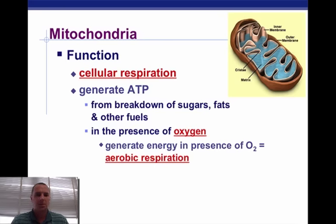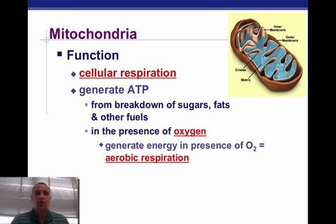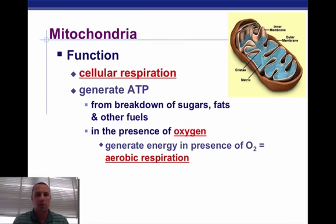Let's talk about the mitochondria first. The mitochondria's main function is to deal with cellular respiration, which is what you and I do. We take in oxygen. We use that oxygen to break down the food that we've eaten to release the energy that's there, that we can help sustain life. So they use oxygen to generate ATP by breaking down the food that we eat. And when you do that, it's called aerobic respiration. We can also break down food in the absence of oxygen, but for right now, we're just concerned with aerobic respiration.